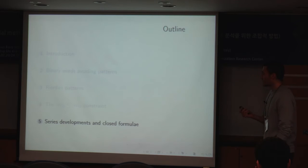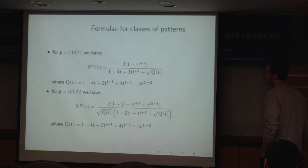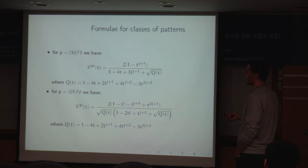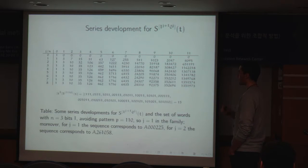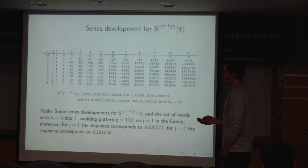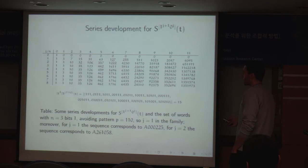Now I am going to show some series developments for the five classes of patterns seen before. This is the instantiation for the three easier classes of pattern, and these are the instantiations for function S for the two more complex ones. To have an idea of the sequences we get, consider the first class of pattern — a strip of 1s followed by a strip of 0s — and instantiating the parameter J from 0 up to 8, we get this series expansion.